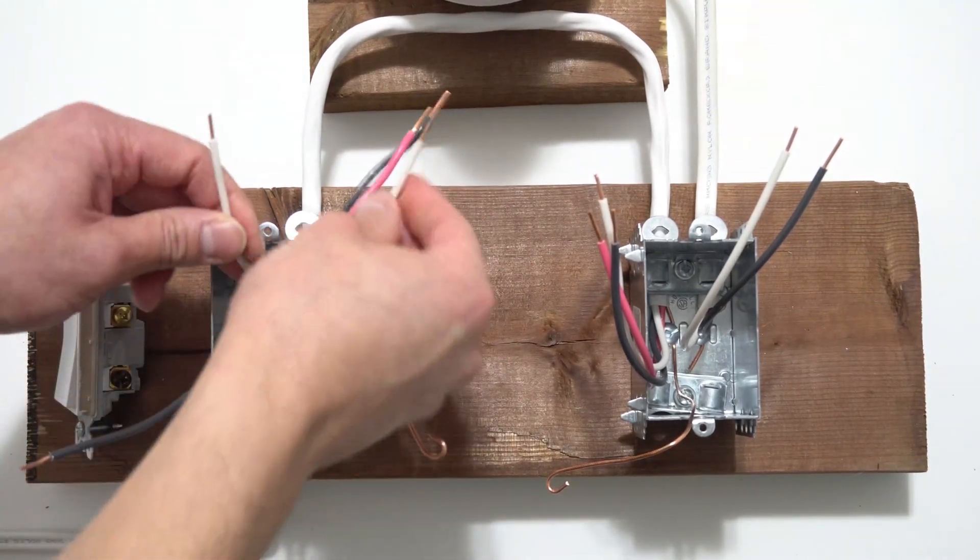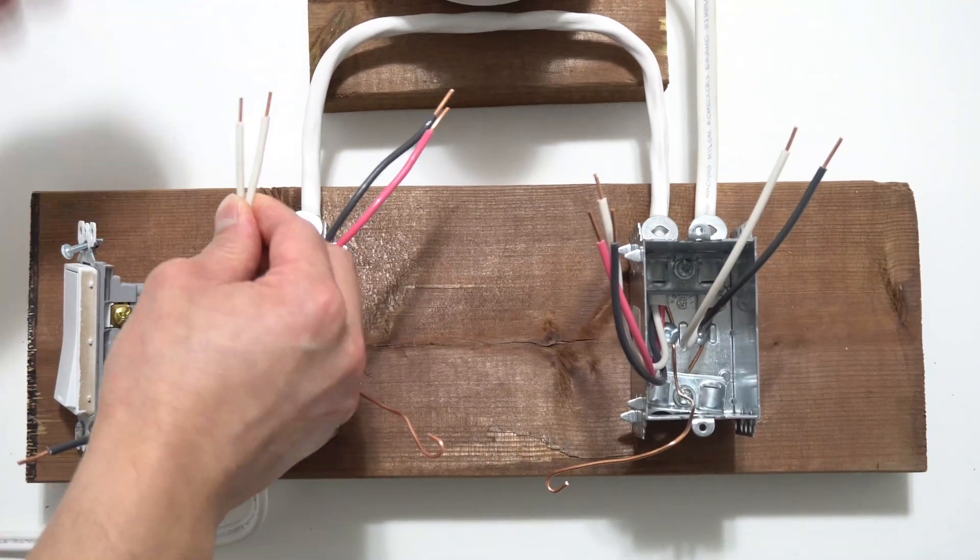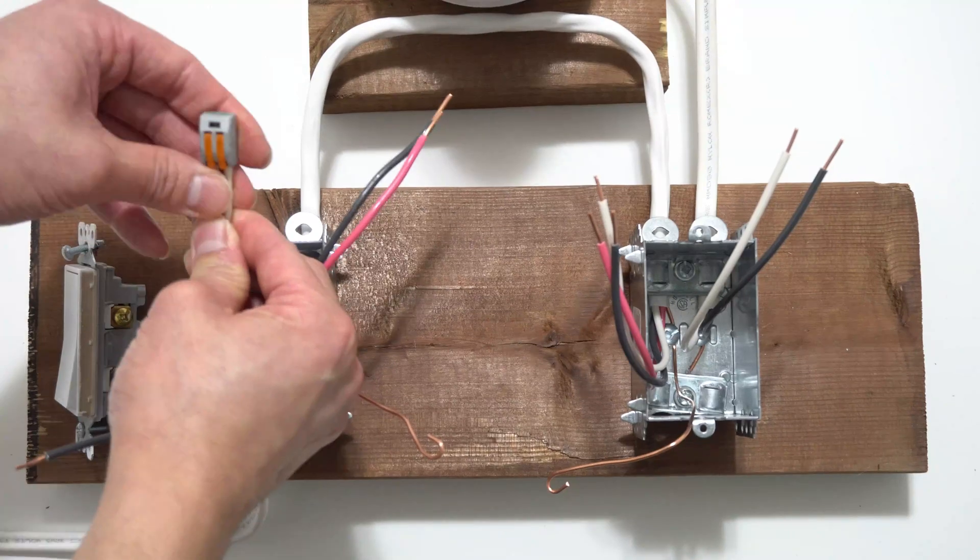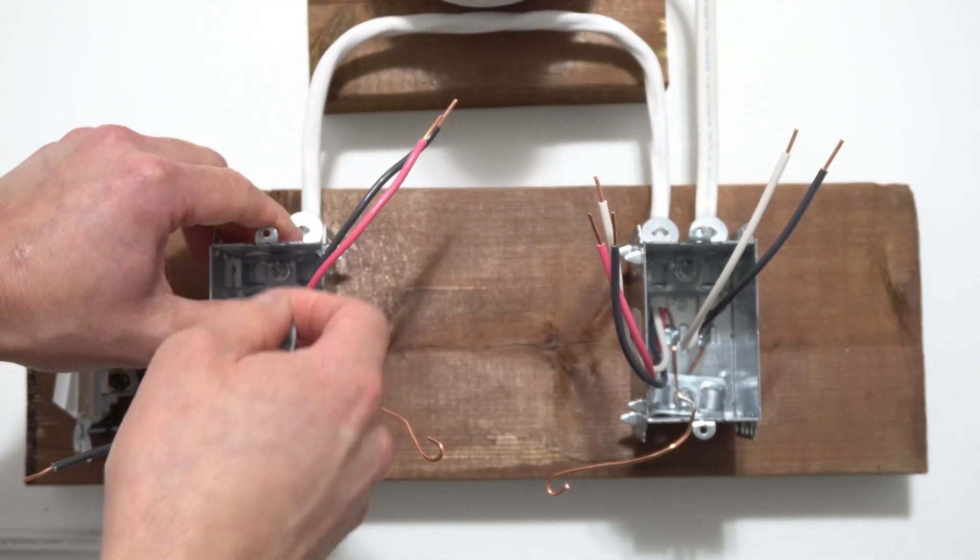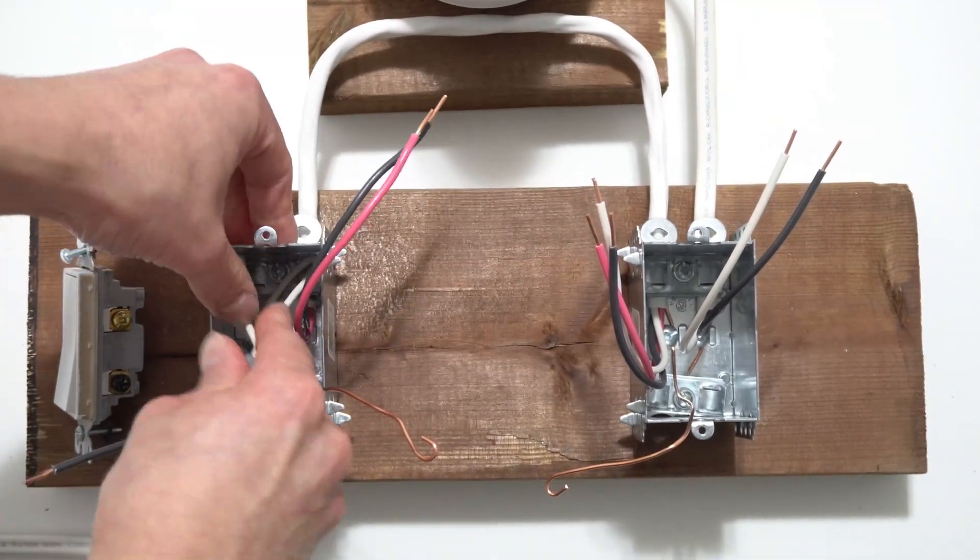Now next step, we want to splice the neutral wires together. Here in my hand I have a splicing connector. I will leave more information in the description below. Now we want to tuck these neutral wires back of the box nicely.